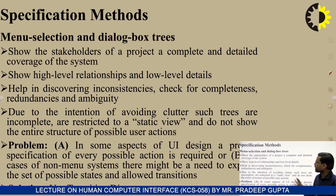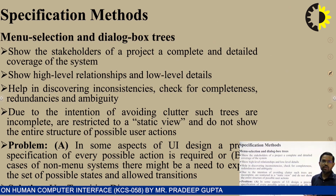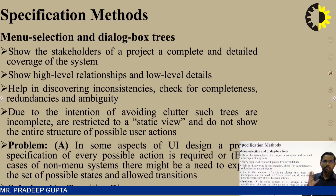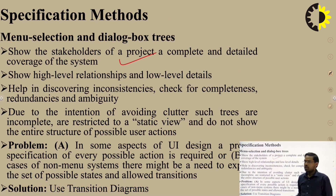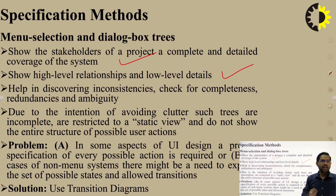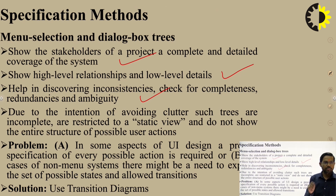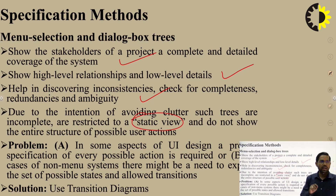Other specification methods include menu selection and dialog box trees. Menu selection shows the stakeholder view of a project with complete and detailed coverage of the system, showing high-level and low-level relationships, and helps discover inconsistencies, check for completeness, redundancy, and ambiguity. However, such trees are restricted to a static view and do not show the entire structure of possible user actions.